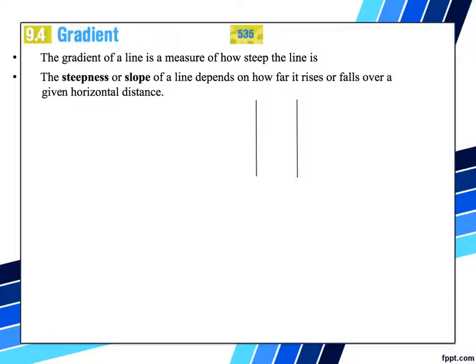Here we have the same horizontal distance. We can see that the red line is much steeper than the blue line, and the reason is over the same horizontal distance, the blue line rises less than what the red line does. So that is the rise, and therefore the red line is much steeper.